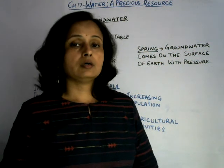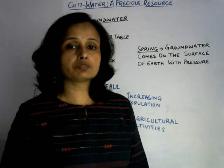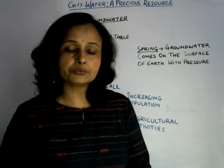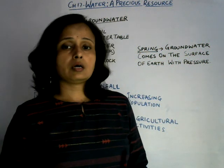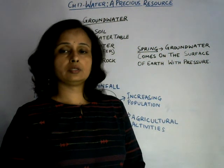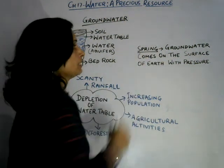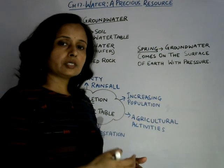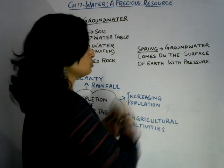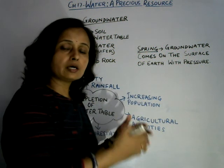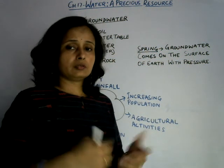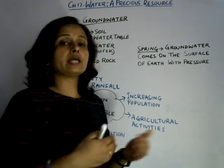If the water table decreases, then there will be less water available — less fresh water available for us — and there will be a lack of underground water. So what should we do? We should do plantation and reduce pollution. One more thing to discuss: natural spring. Somewhere on the ground, water comes to the surface of the earth with pressure from an underground source. When water comes to the surface of the earth with pressure from underground, that kind of natural source of water is called a natural spring.